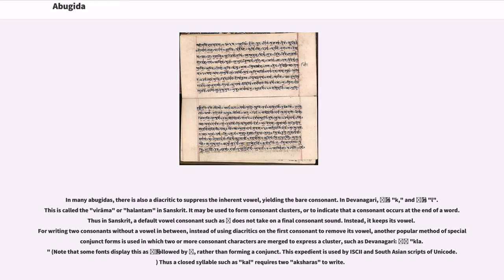The virama may be used to form consonant clusters or to indicate that a consonant occurs at the end of a word. Another popular method uses special conjunct forms in which two or more consonant characters are merged to express a cluster, such as Devanagari 'pla'. A closed syllable such as KAL requires two Aksharas to write.